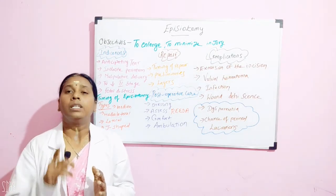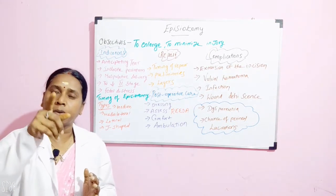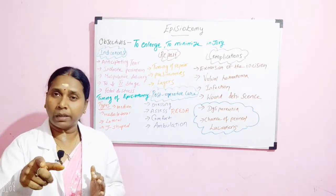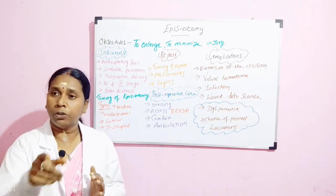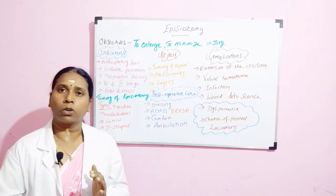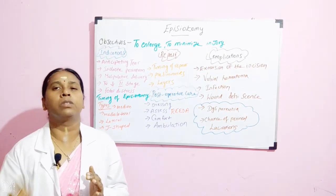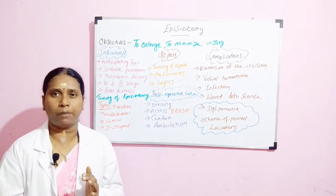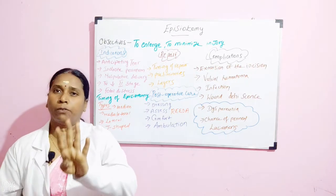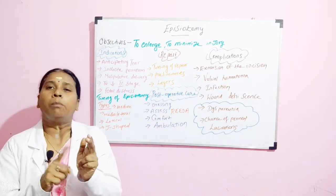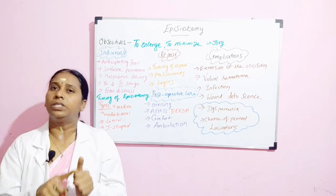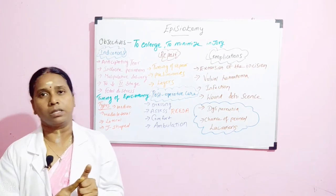The J-shaped episiotomy starts from the center of the fourchette, goes straight, and then takes a five o'clock or seven o'clock position, forming a J shape. So there are four types: median, mediolateral, lateral, and J-shaped incision.